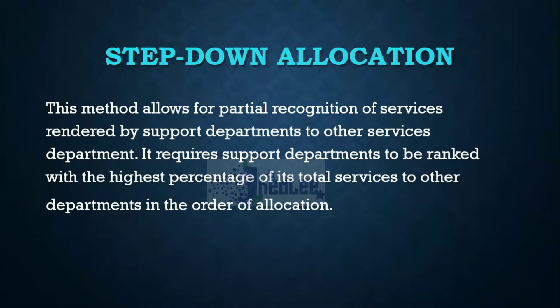Basically, you're going to compare the service departments with each other to find out which one is providing the highest percentage of service to another department. You will start allocating with that department first, then down to the other department with the next higher value, down to the one that is providing the least. That is why it's called the step down.